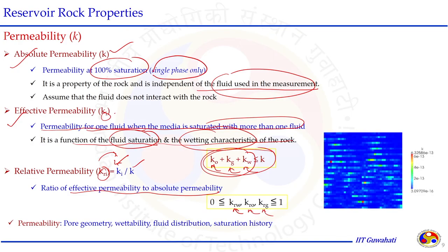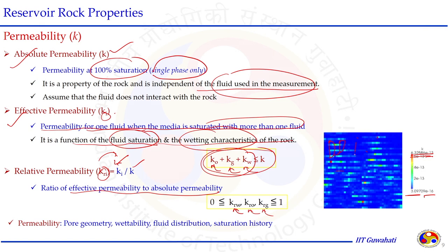Variation in permeability also exists similar to porosity. The color-coded maps show variation from very small values like 10^-16 to 10^-13 in consolidated reservoirs. Different weighing factors — height, area — can be used to calculate the average permeability of the reservoir domain from multiple samples, similar to the porosity approach.